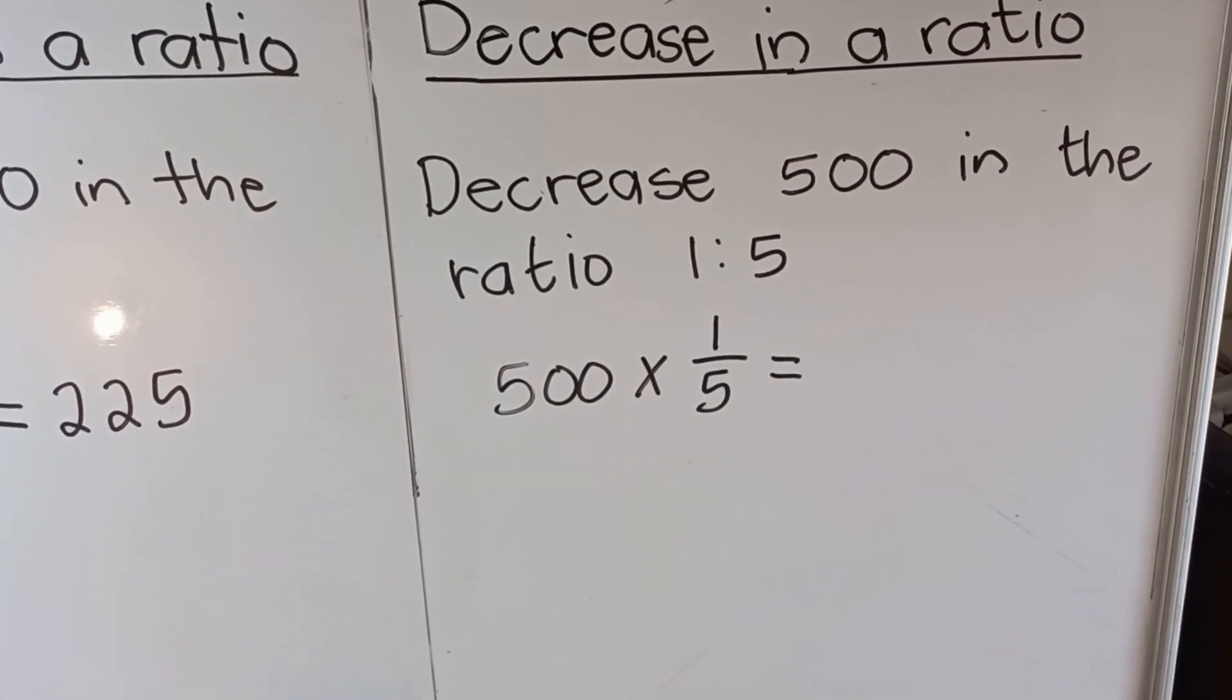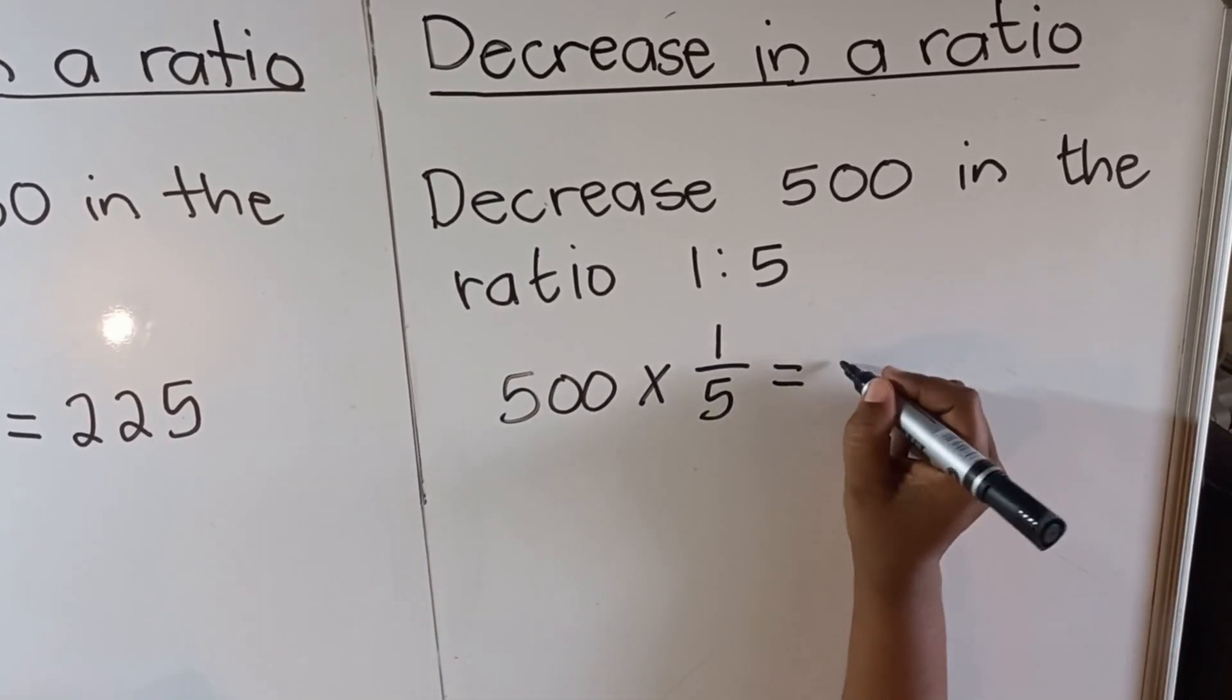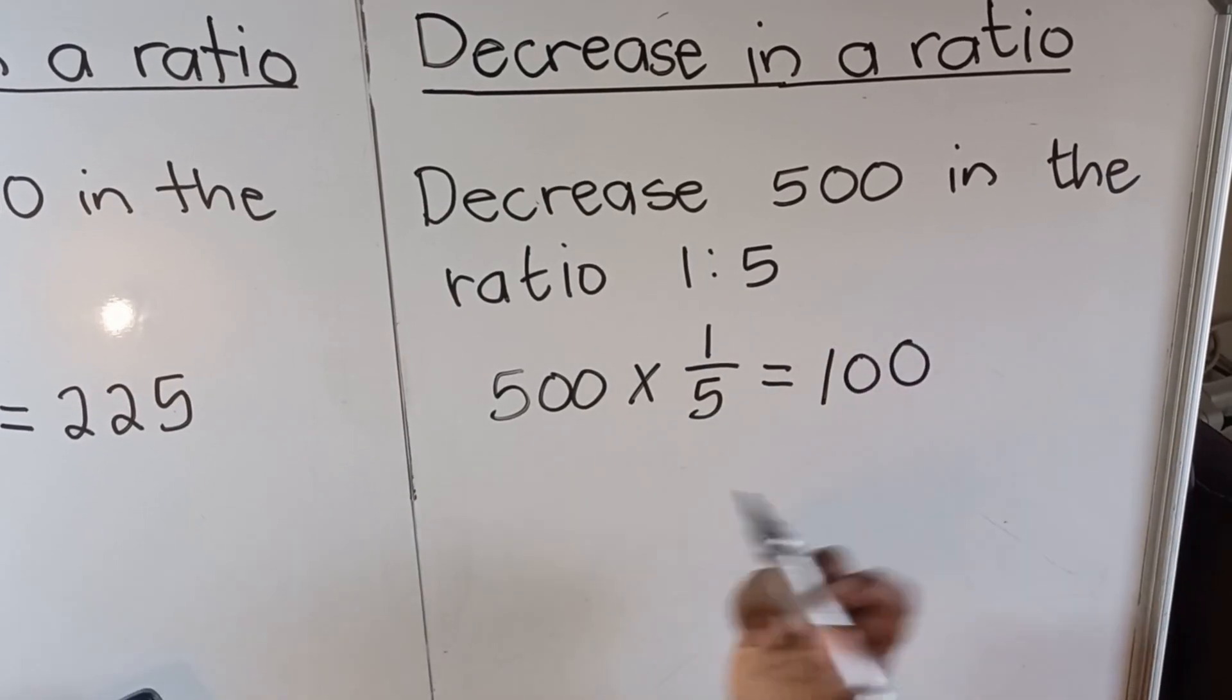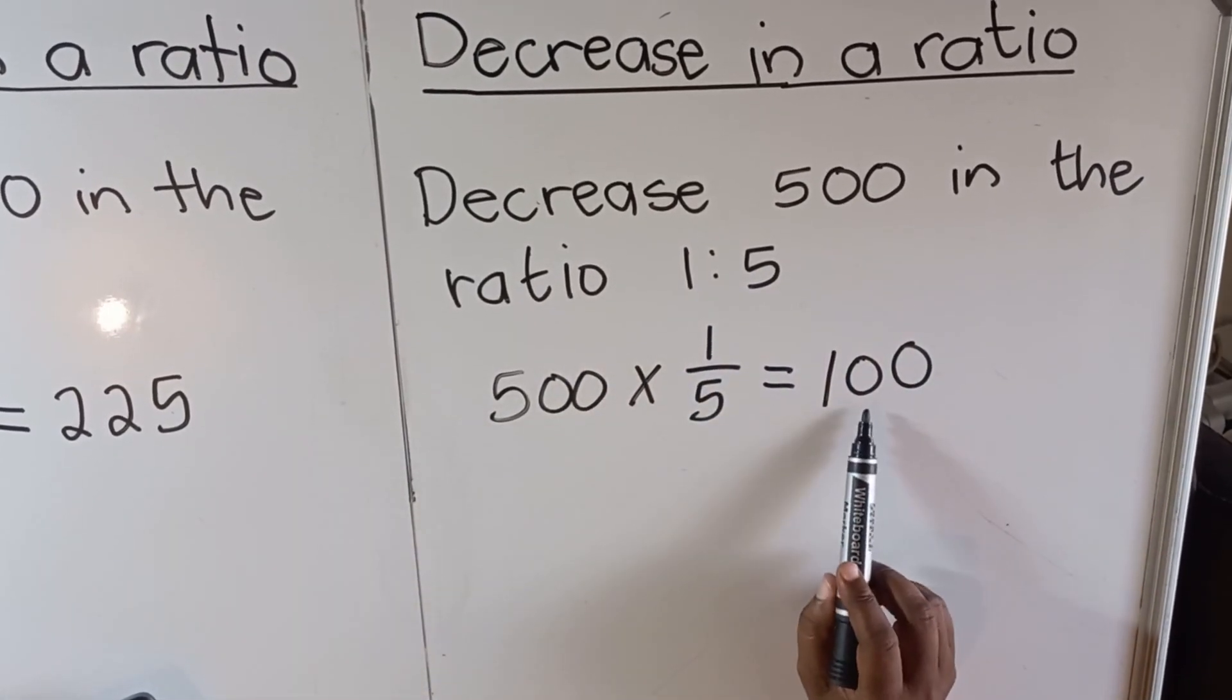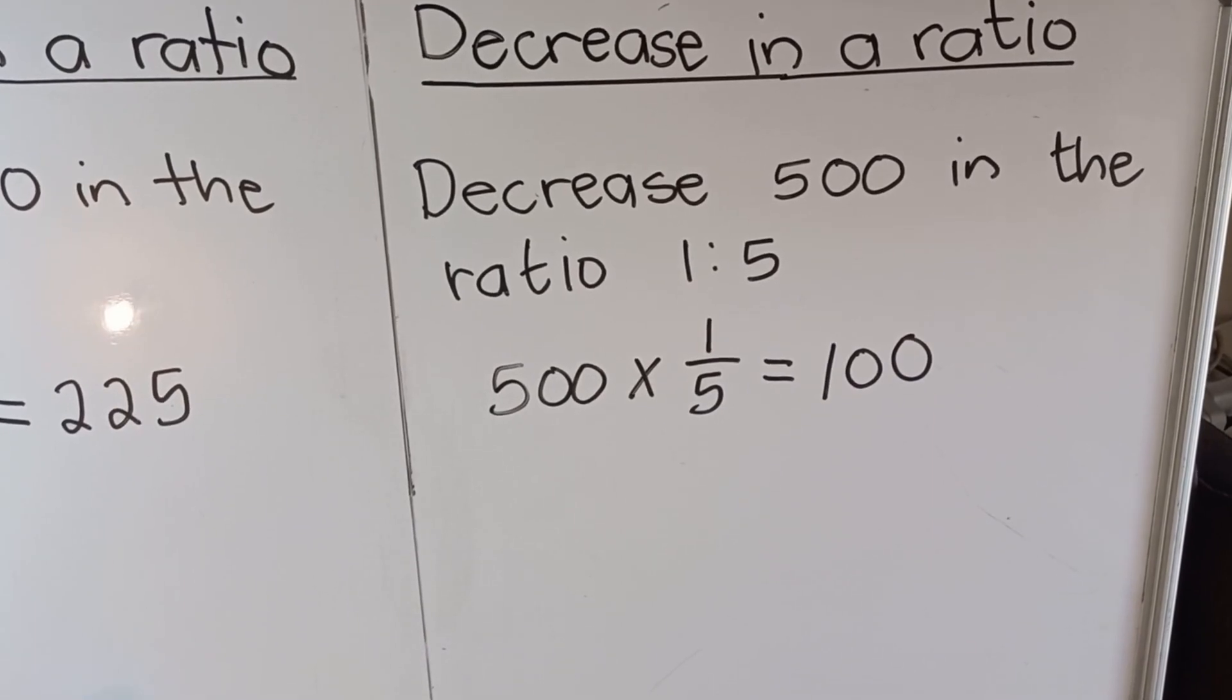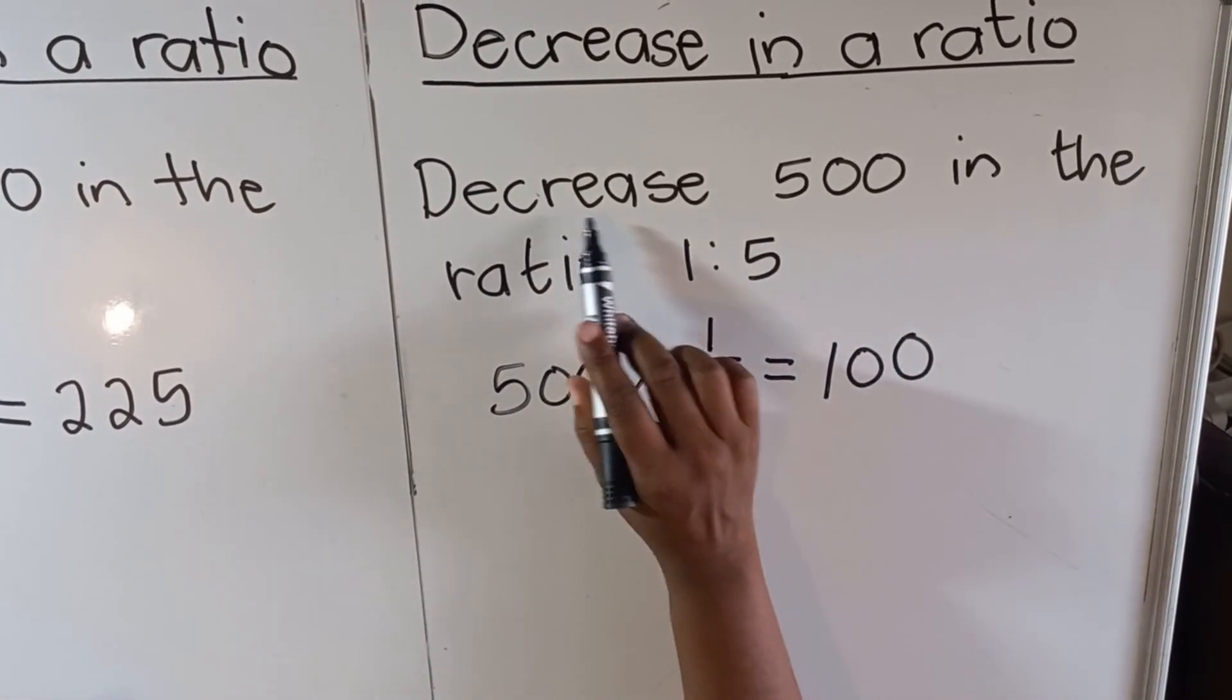When you decrease 500 in a ratio 1 is to 5, you get 100. So the thing is that you look at your ratio. When they say decrease, you write the smaller number on top.